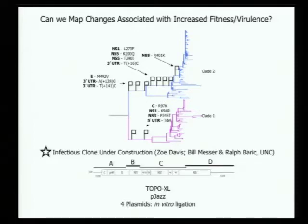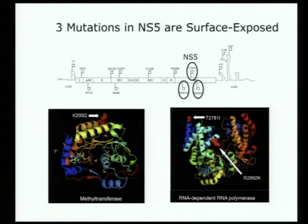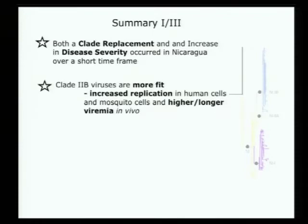We've been working on creating an infectious clone representing these Nicaraguan strains to identify which amino acids are associated with the replicative advantage. We have candidate mutations: NS5 is the RNA-dependent RNA polymerase in dengue, and of the very few mutations between clades, three are in the methyltransferase domain and two are in the polymerase — one in the groove where RNA is supposed to lie, and another where the polymerase interacts with the helicase. These are two very interesting mutations that we're pursuing with structural biologists and enzymologists. In summary, we have both a clade replacement and an increase in disease severity, and clade 2 viruses are more fit with increased replication.